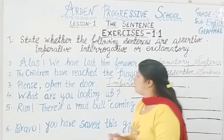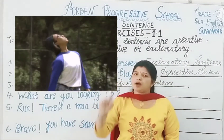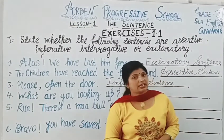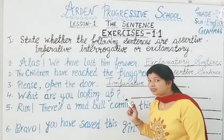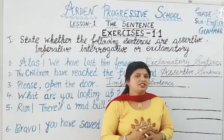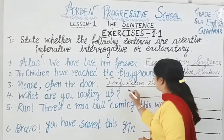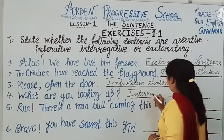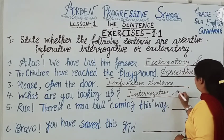Fourth one: What are you looking up? In this statement, you can see that a question is being asked, and at the end of the statement there is a question mark. By seeing the question mark, you must have understood that this is an interrogative sentence.